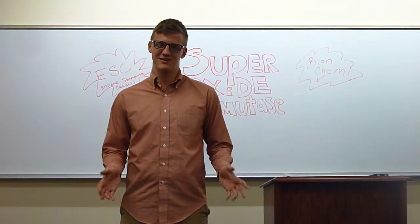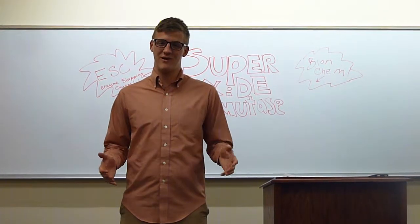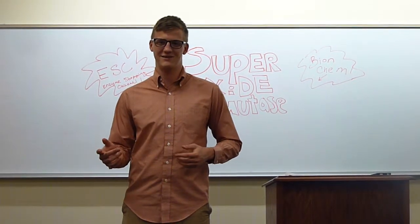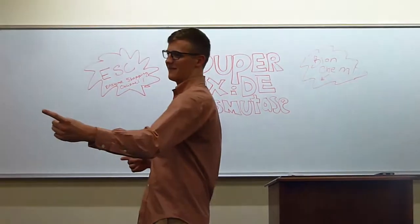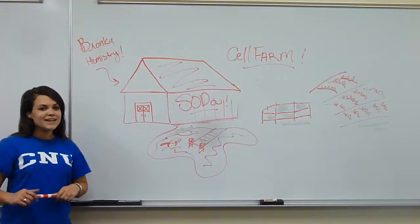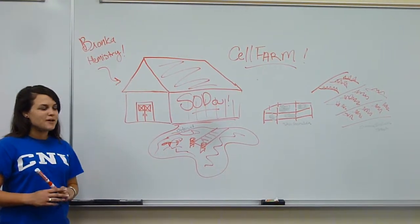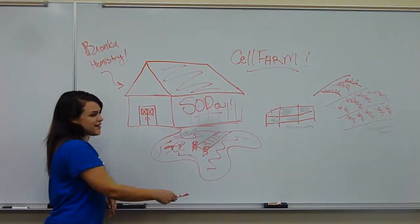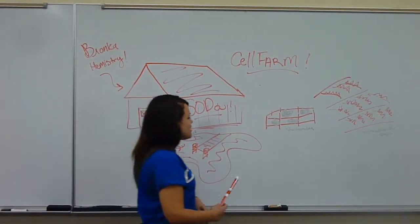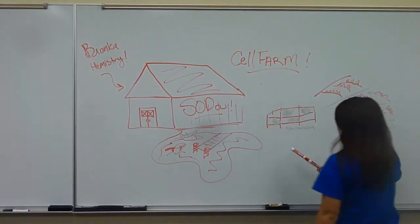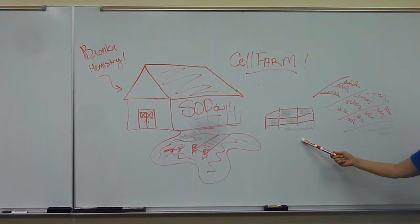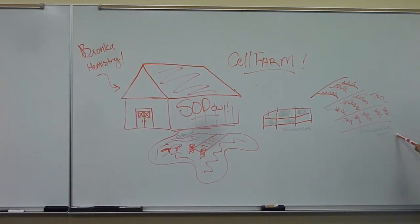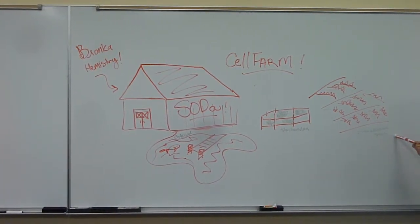To learn more about where our soda comes from, here's Bianca Hemistry. Here on the cell farm, SOD 1 is produced in our cytosol. SOD 2 is produced in our mitochondria. And SOD 3 is produced in our extracellular space.